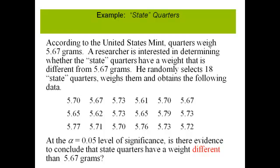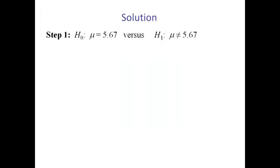Step one is to set up our hypotheses. Our null hypothesis is going to be H0: μ equals 5.67 grams, and our alternative is H1: μ is not equal to 5.67, because remember we want a two-tailed test.